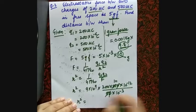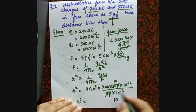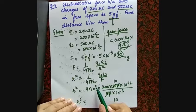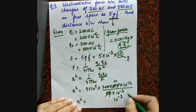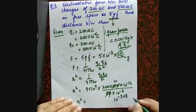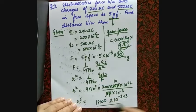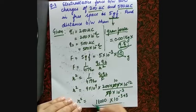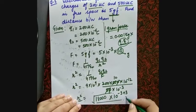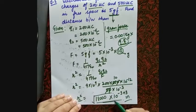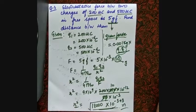Collecting the powers of ten: 10⁹ × 10⁻¹² = 10⁻³, and dividing by 10⁻³ cancels to give 10⁰. We are left with 9 × 100000/1 = approximately 18000, so r² ≈ 18000. Taking the square root gives the value of r in meters. Remember, r must be in meters.